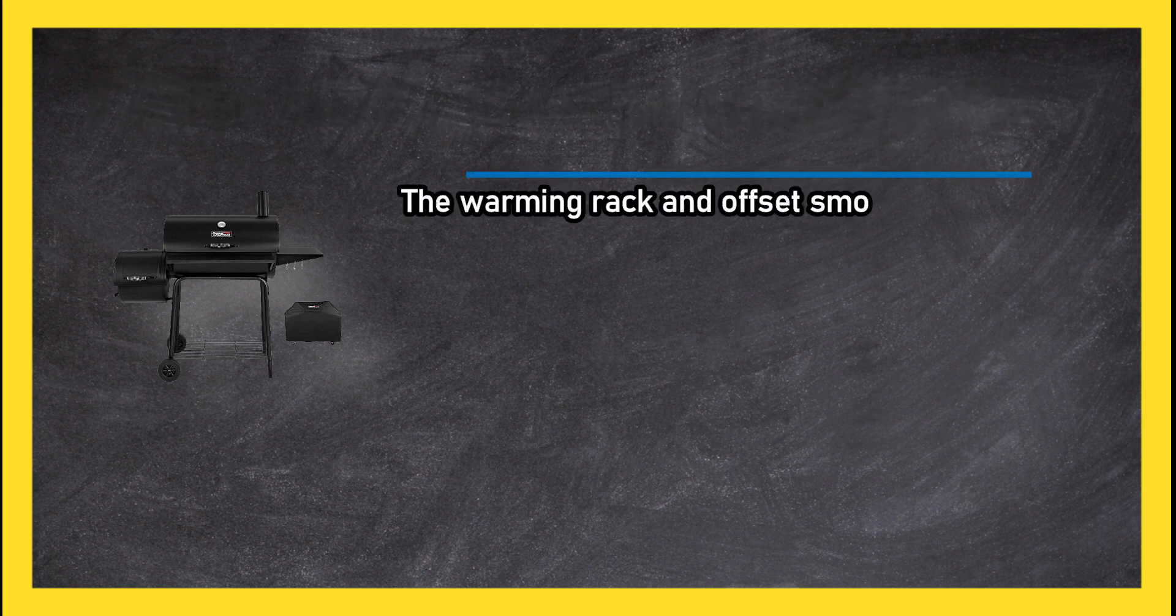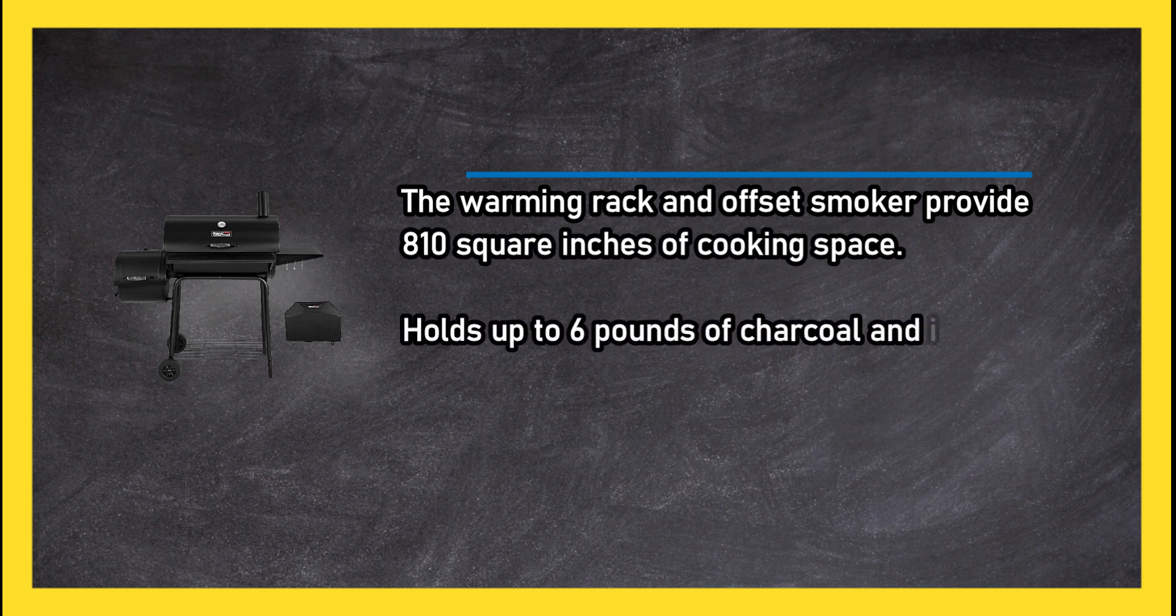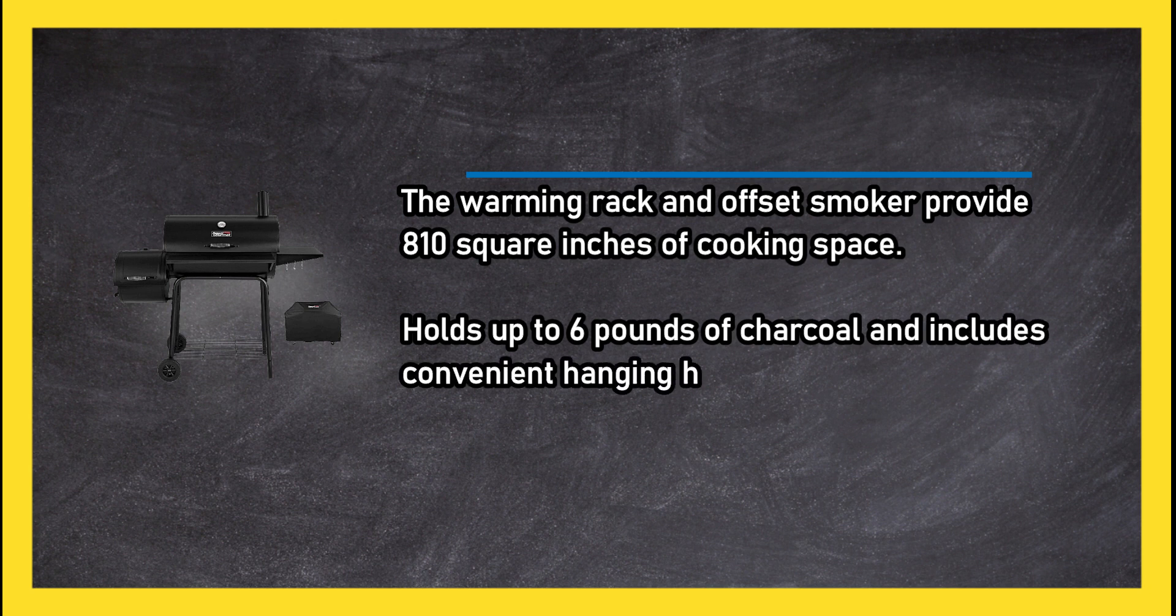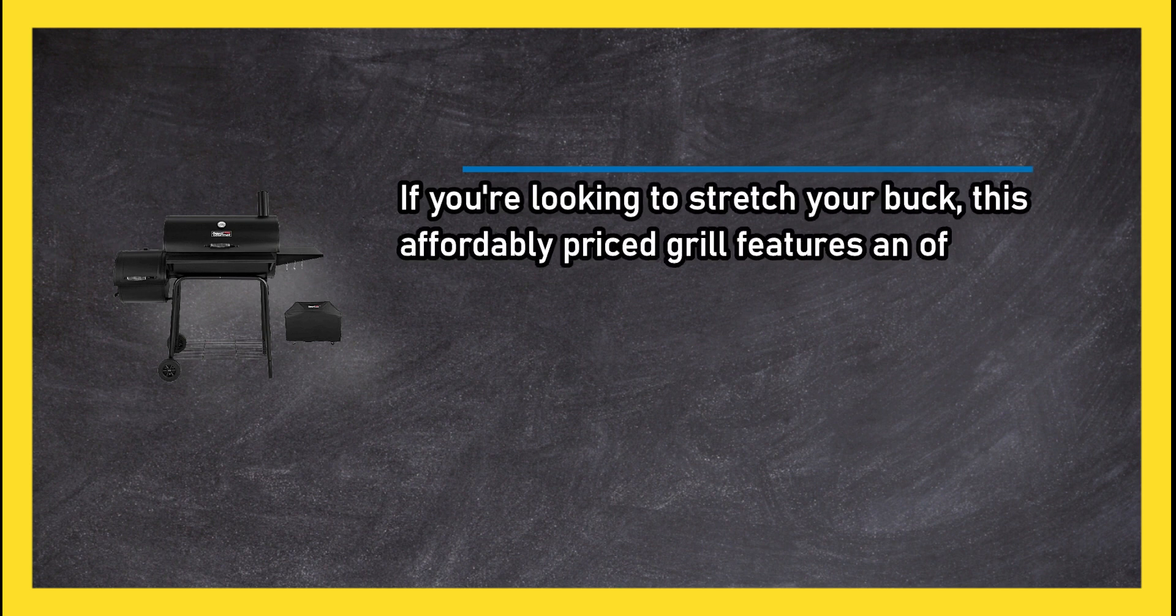The warming rack and offset smoker provide 810 square inches of cooking space. Holds up to six pounds of charcoal and includes convenient hanging hooks. If you're looking to stretch your buck, this affordably priced grill features an offset smoker and it comes with a free cover.